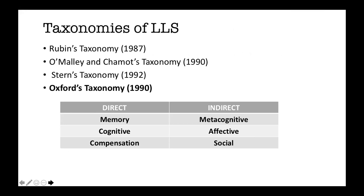Numerous attempts to define strategies led to many taxonomies with different focal points. However, Oxford's taxonomy stands out as being more elaborate and comprehensible, thanks to its individual strategies based on four basic language skills. Direct strategies include memory strategies for storage and retrieval of new input, cognitive strategies for comprehension and usage of language, and compensation strategies for maintaining linguistic performance. Indirect strategies are comprised of metacognitive ones for organizing the learning process, affective ones to take maximum advantage of feelings and motivations, and social strategies to enrich language learning through interpersonal communication.